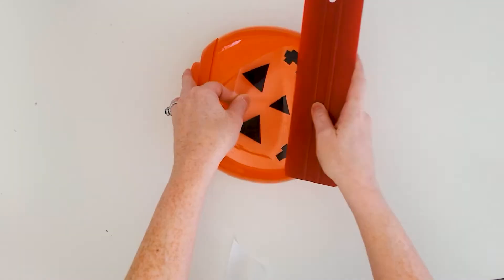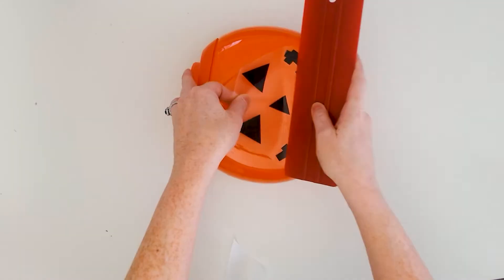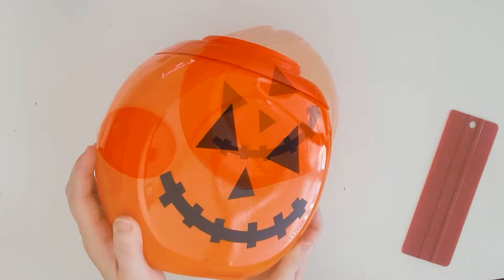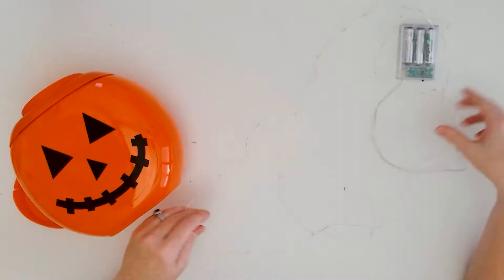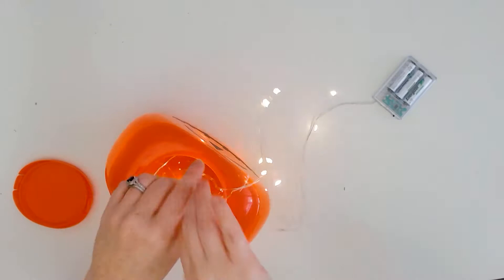It comes out so adorable. I absolutely love how it came out. If you want, you can add some battery operated lights to the inside. I found the strand in the floral section of the craft store. Just turn on the lights and put them in, and then you've got this fun lighted jack-o'-lantern.